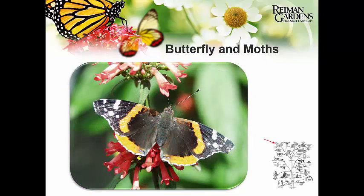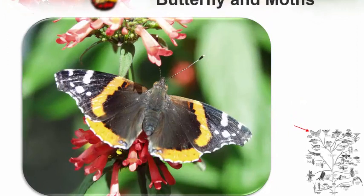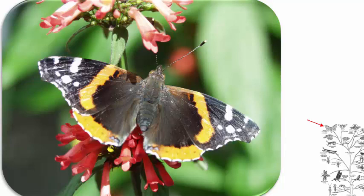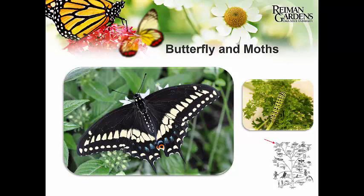Another butterfly doing really well is the red admiral. If you're out gardening especially later in the day, this is one you'll probably see flying around. What makes red admirals a lot of fun is they're territorial — males set up territories in your backyard and gardens. As you're out working, they'll come fly at you, fly around you, even land near you because they're checking you out. It's almost like having your own pet butterfly while you're out there.